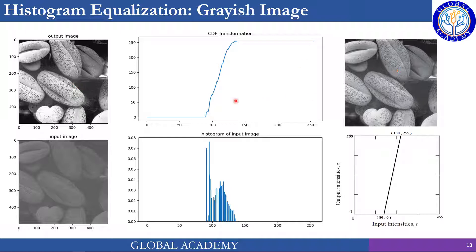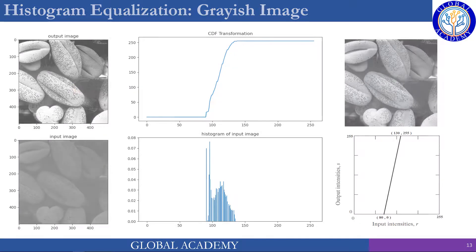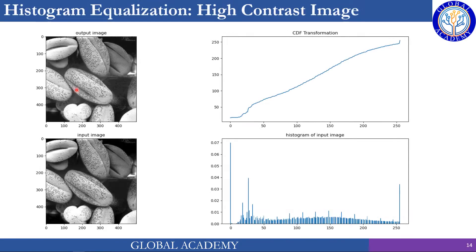At the same time, we have an autonomous way — we generated this transformation using the input image itself. So there is no inspection required, no extra calculation required to generate this transformation.